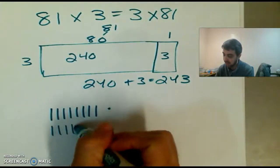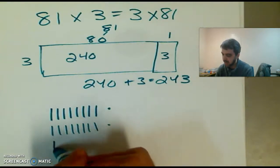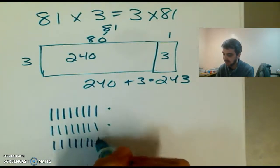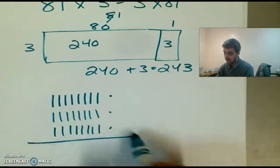We have it once. And if we do it again, we have it twice. Is that 81? 1, 2, 3, 4, 5, yep. 10, 20, 30, 40, 50, 60, 70, 80. So I have 81, 81, 81.